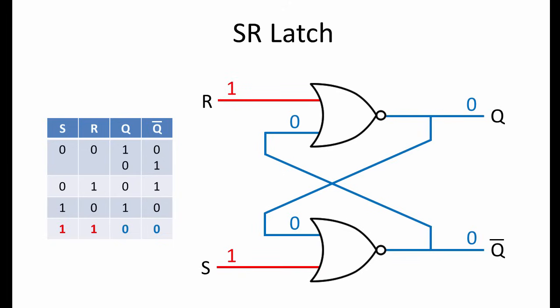This would sort itself out if one of the inputs fell to 0 before the other. For example, if R fell to 0 first, with S still at 1, then Q would become 1 again. If, however, both inputs were at 1, and both fell to 0 at the same time, we'd have what's known as a race condition between the two gates. They'd be racing each other to feed back their new output, and it's impossible to know which one would win.